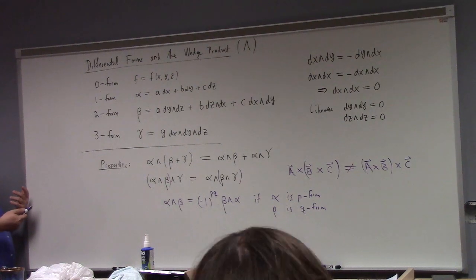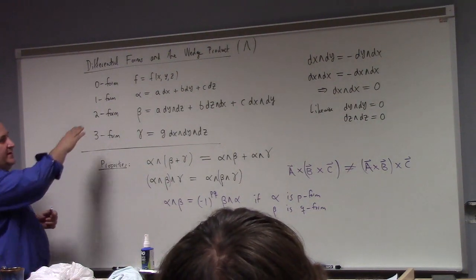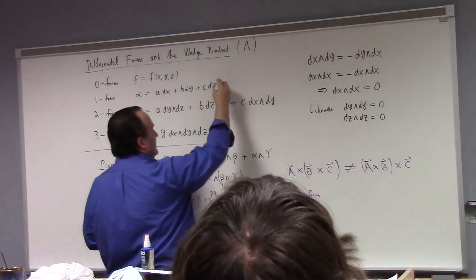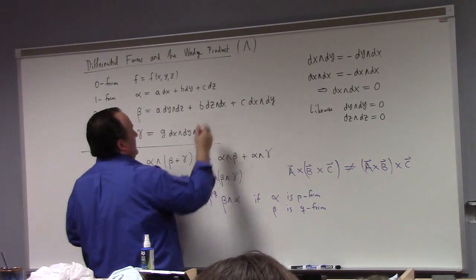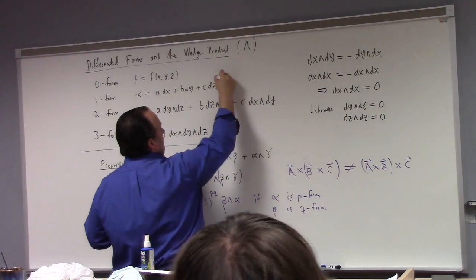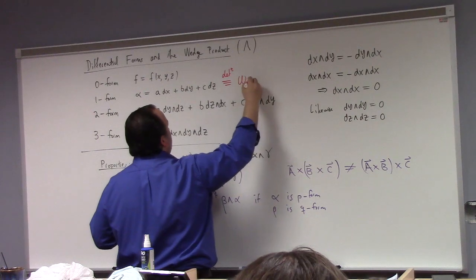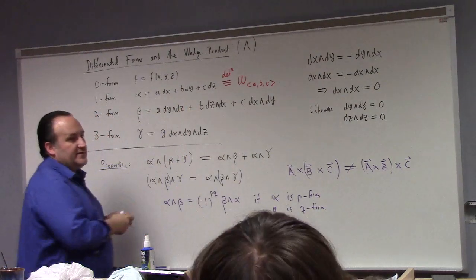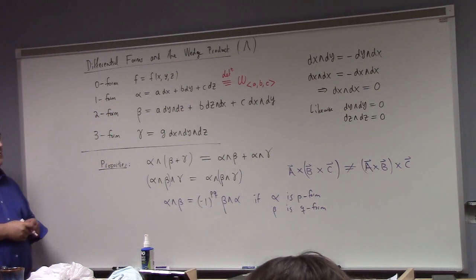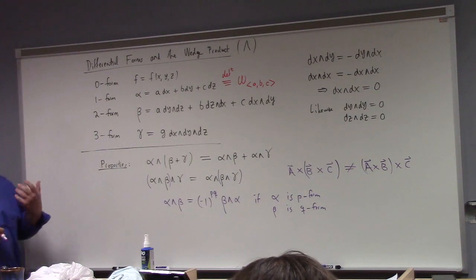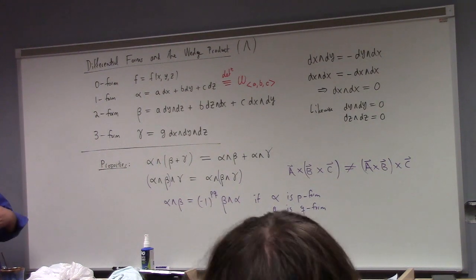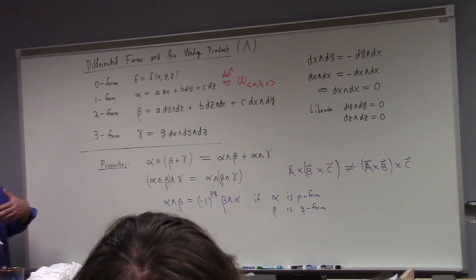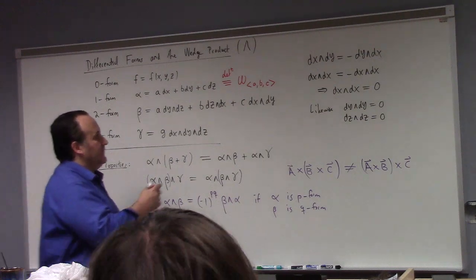There are a couple of correspondences we should introduce. Every one form in three dimensions corresponds to a vector field — this is the so-called work form correspondence. By definition, omega sub (a, b, c) is the one form corresponding to the vector field (a, b, c), where a, b, and c are smooth functions. So to every vector field, we have a corresponding one form.